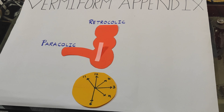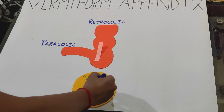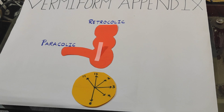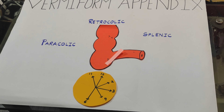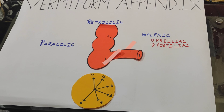The second position is retrocolic — retrocolic means behind the colon — and it corresponds to the 12 o'clock position. The third position is splenic, when the tip of the appendix points towards the spleen, and it corresponds to the 2 o'clock position.